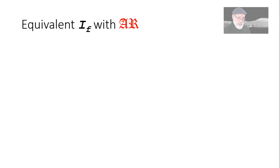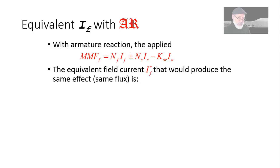What is the equivalent field current with armature reaction? It is a combination of the field coil current, the series coil current and the armature current. The equivalent field current IF* that we use to enter in the curve would produce the same effect, the same flux as this one. We sum the MMF and divide that by the number of turns in the field coil.